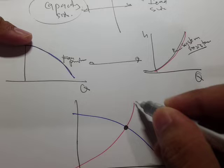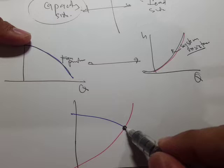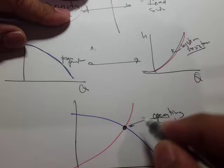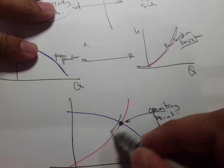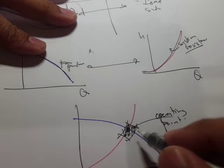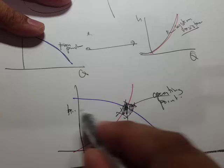The intersection point between the system resistance curve and the fan performance curve is called the operating point. Ideally, this is where we want to operate — the fan delivers the required flow rate at the required pressure. Since this is an estimate, there is a region around this point where operation is acceptable.